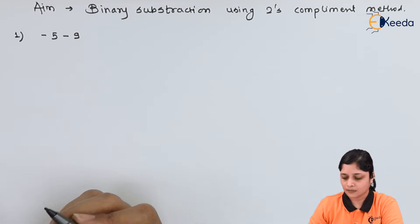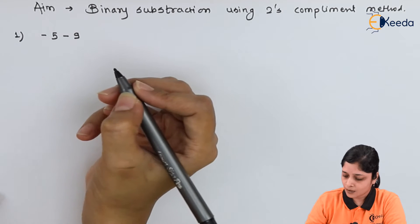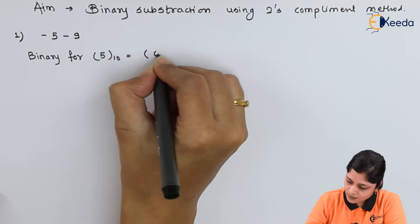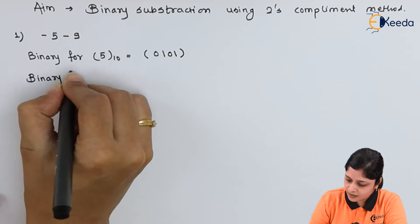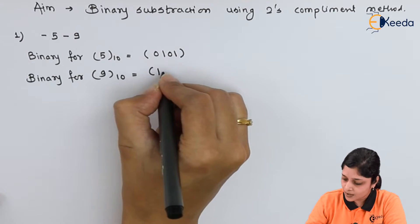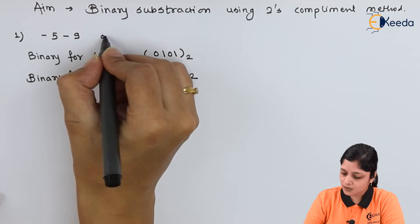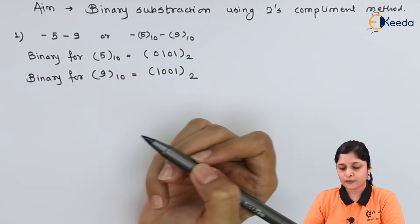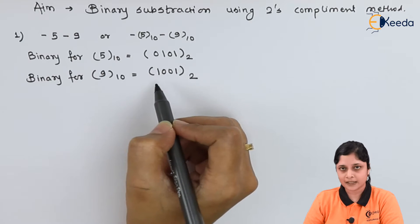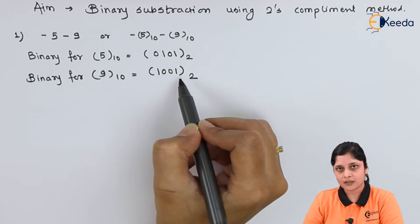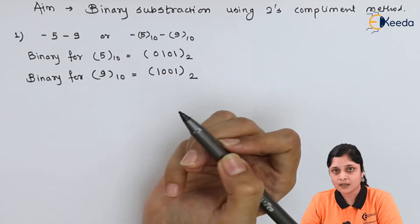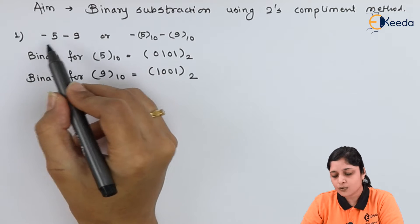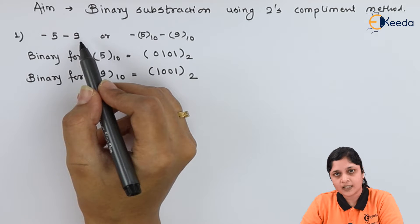First procedure is to calculate the binary. Binary for 5 in base 10 is 0101. Binary for 9 in base 10 is 1001. Your question will be in different format, so you have to calculate according to the procedure. We have written the binaries, all bits are equal - four here, also four there. Next step is check negative sign. For nine it is negative, for five also it is negative. So you have to calculate first 2's complement of 5, then 2's complement of 9, and then perform the binary addition.